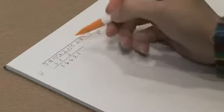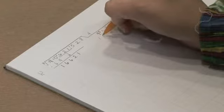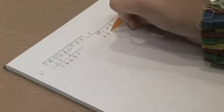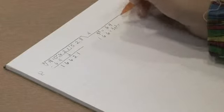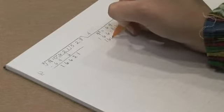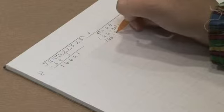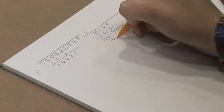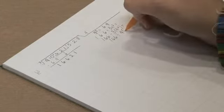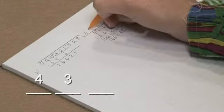And so to find the trial root for the tens, we're going to take 166 and divide that by 3n squared. So we have 166 divided by 3 times 4 squared. That's 166 divided by 48, which gives us 3. 3 will be our trial root.